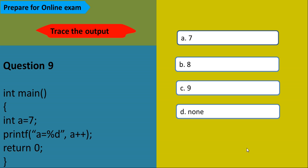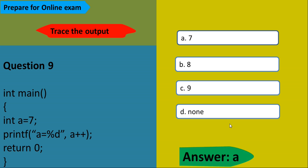Here is a program — find the output. A equals 7, then we print the value of A using post-increment (a++). With post-increment, the current value of A is printed first, then it is incremented in memory. So it will print 7 first. The answer is 7.